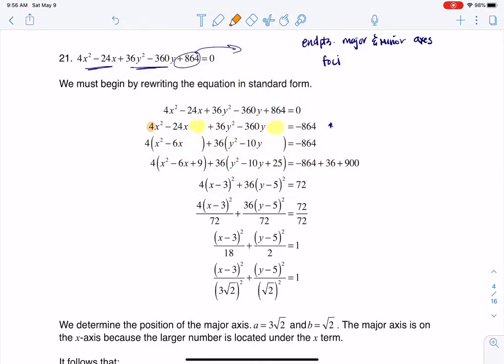When you complete the square, the little caveat is that you have to have a lead coefficient of one. Right now I have lead coefficients in front of my squared terms of 4 and 36, so I need to factor those out before I do anything. That's what you see me doing here—I factored the 4 out of both x terms and I factored the 36 out of both of the y terms.